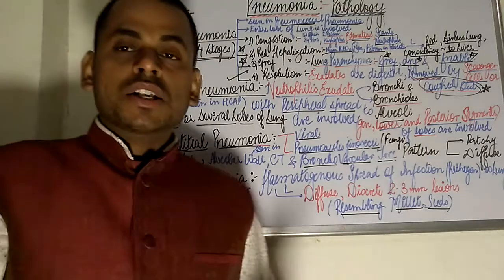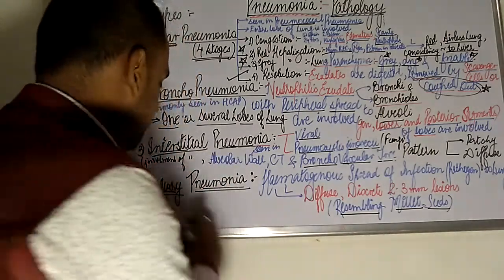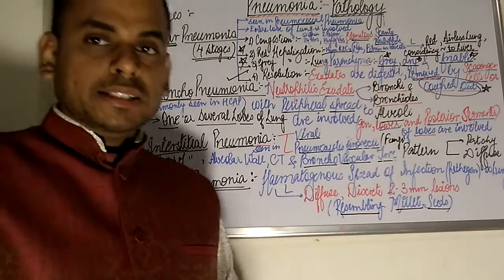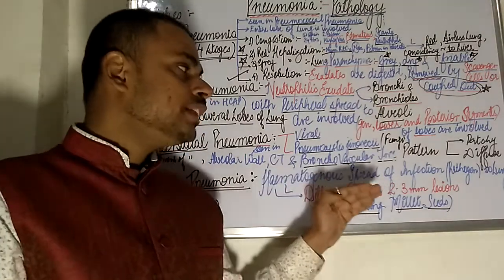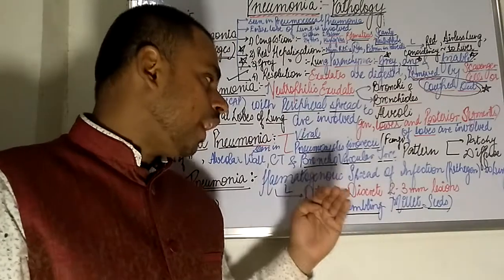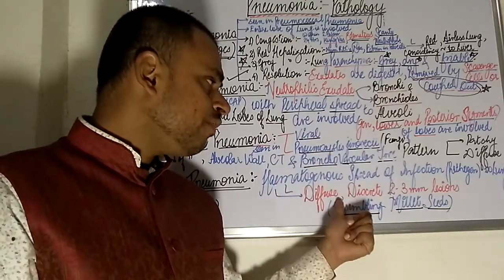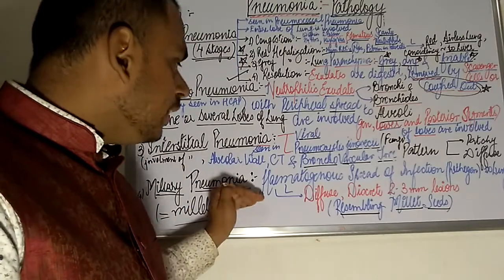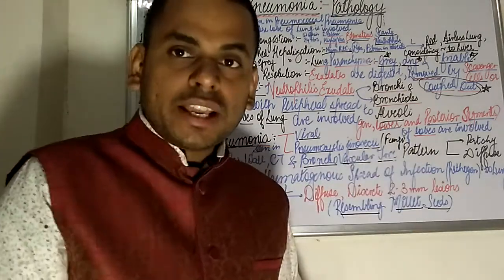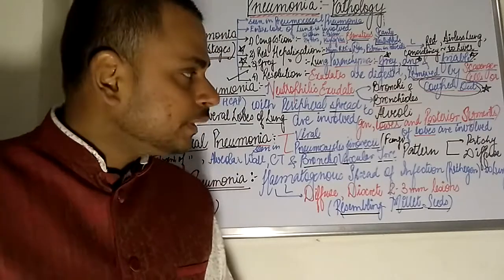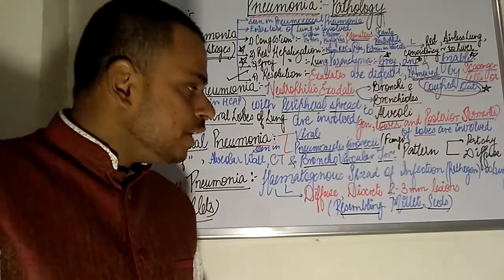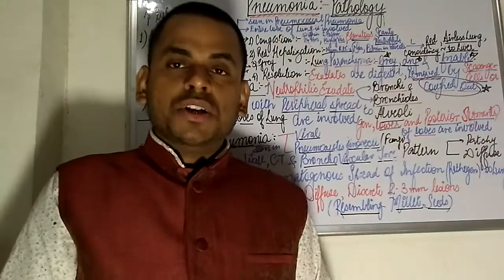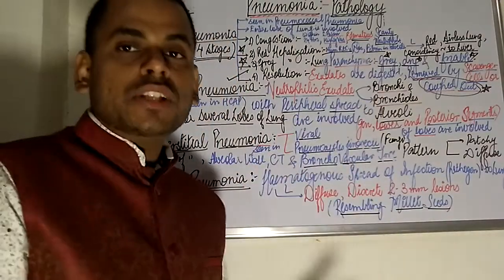The last category is miliary pneumonia. The word 'miliary' refers to minutes — small seeds. In this type, there is hematogenous spread of the pathogen to the lungs, leading to diffuse discrete 2–3 mm lesions resembling the seeds of a millet. The hematogenous spread of infection results in lesions that are diffuse and discrete, resembling millet seeds.